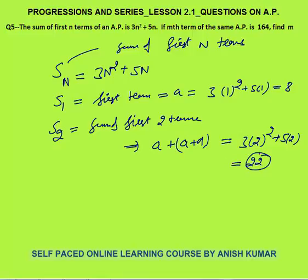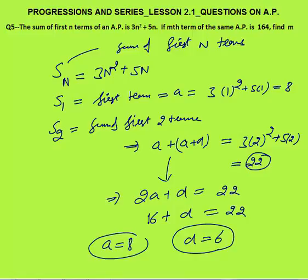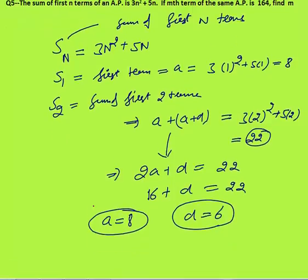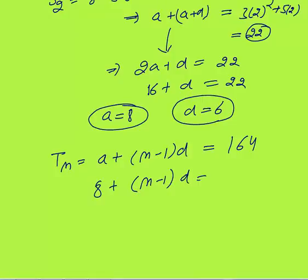So 2a + d = 22, and a = 8, therefore 16 + d = 22, giving d = 6. We now have a = 8 and d = 6. The mth term is given as 164: tₘ = a + (m−1)d = 164.